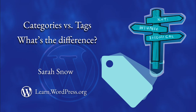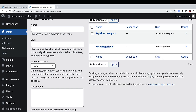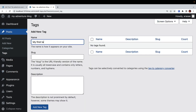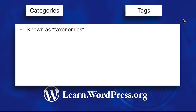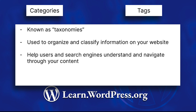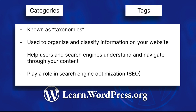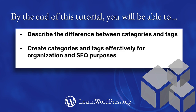Categories vs. Tags — what's the difference? If you're new to blogging, you may have noticed in post settings two options: categories and tags. When you start to experiment with them, at first they can seem very similar, and their dashboards look almost identical. Categories and tags are two forms of WordPress taxonomies, and both are used to organize and classify content on your website. They help users and search engines understand and navigate through your content easily, and also play a role in SEO by providing search engines with better context about the content's focus and structure. By the end of this tutorial, you will be able to describe the difference between categories and tags, and create categories and tags effectively for organization and SEO purposes. Let's get started.